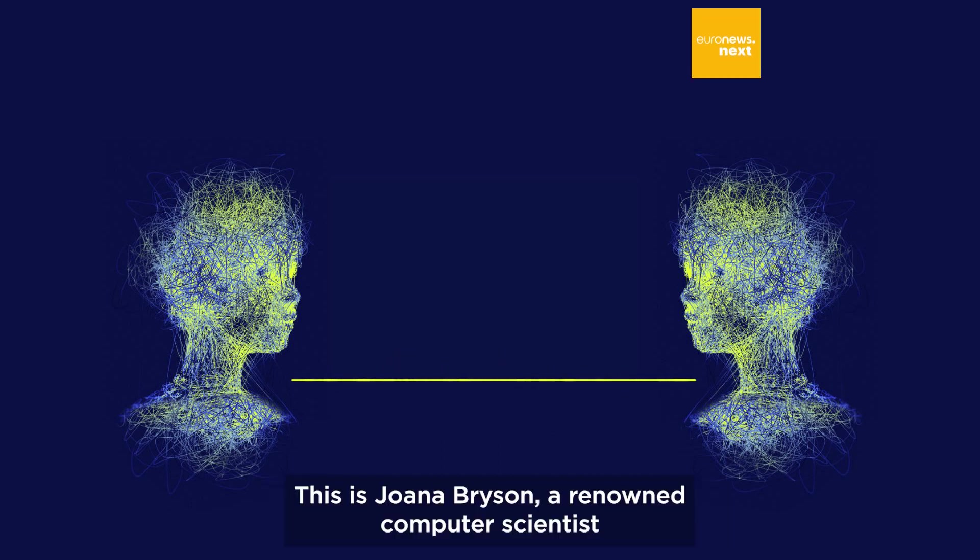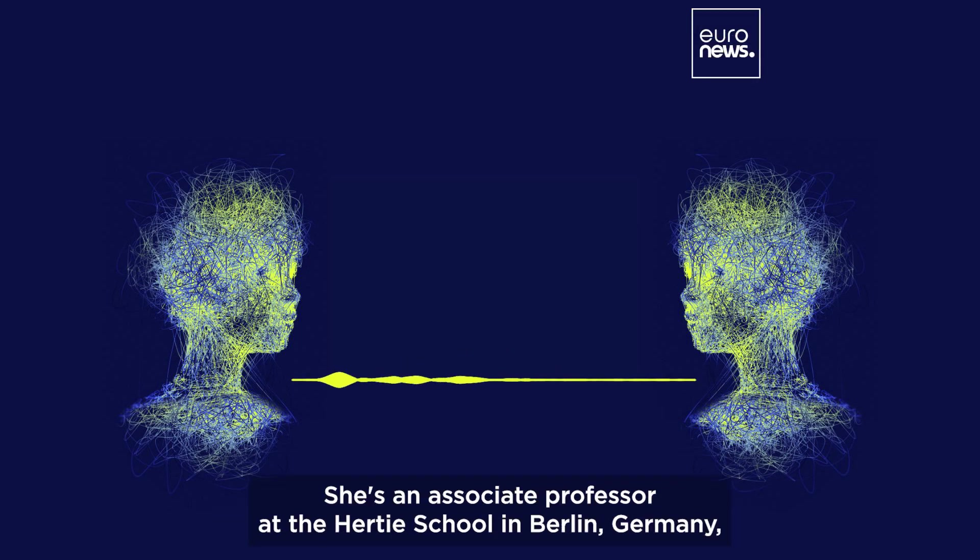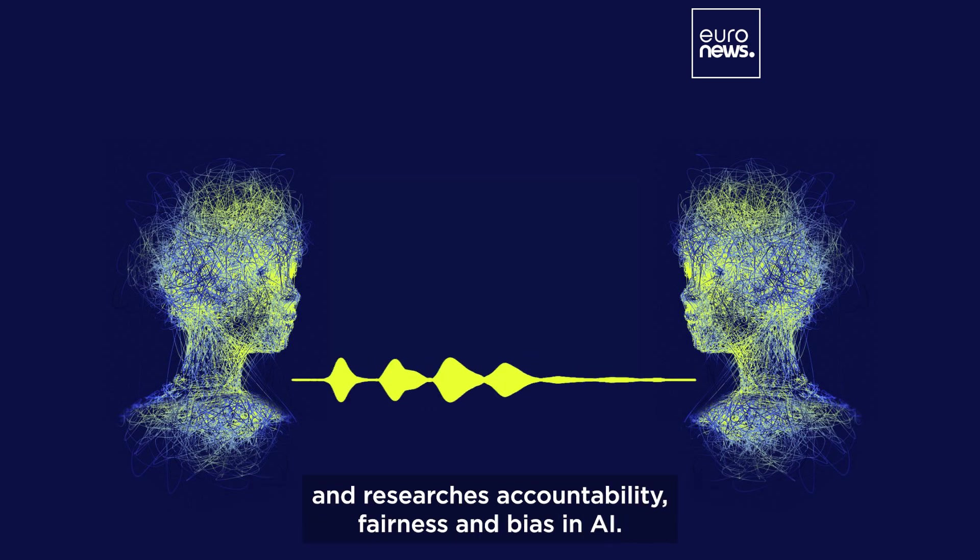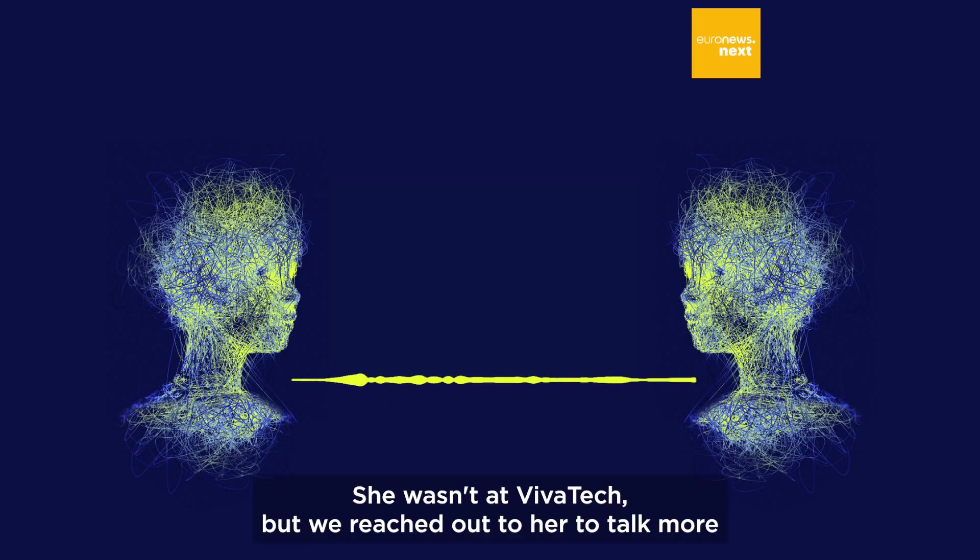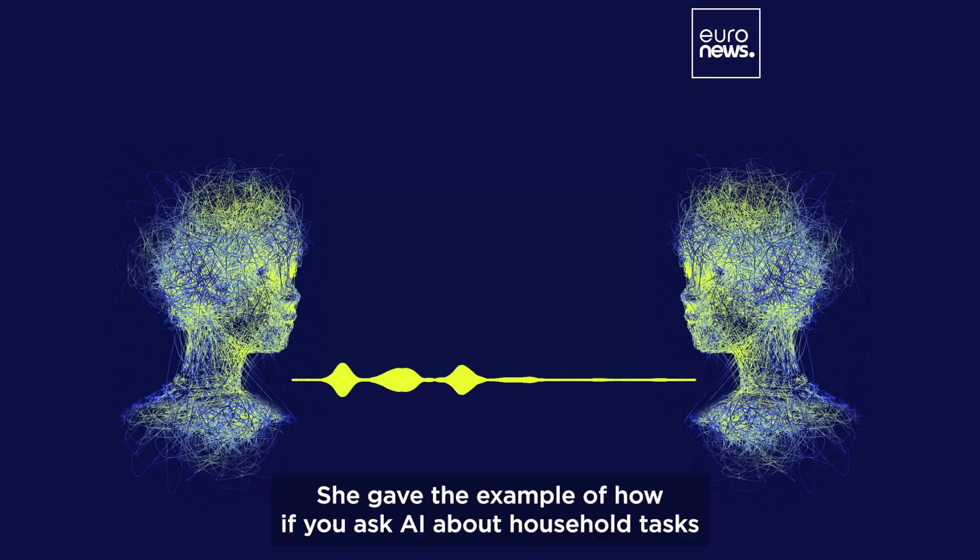This is Joanna Bryson, a renowned computer scientist specializing in AI ethics and societal impacts. She's an associate professor at the Hertie School in Berlin, Germany, and researches accountability, fairness, and bias in AI. She wasn't at VivaTech, but we reached out to her to talk more about this aspect of how AI learns.